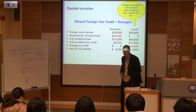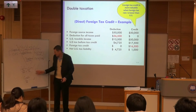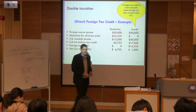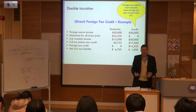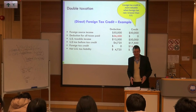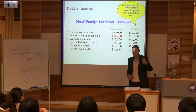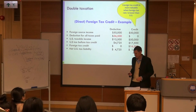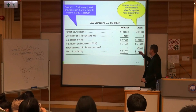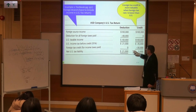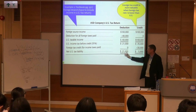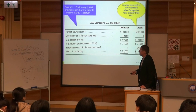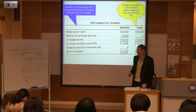The deduction approach is only better in rare circumstances — for example, if you're in a country with less than 20% income tax and there are large deductions, the deduction approach might be more beneficial. Looking at the book example comparing both approaches, the credit approach wins in most situations. Hands up for which approach you'd prefer — and yes, the credit approach is by far the most popular.